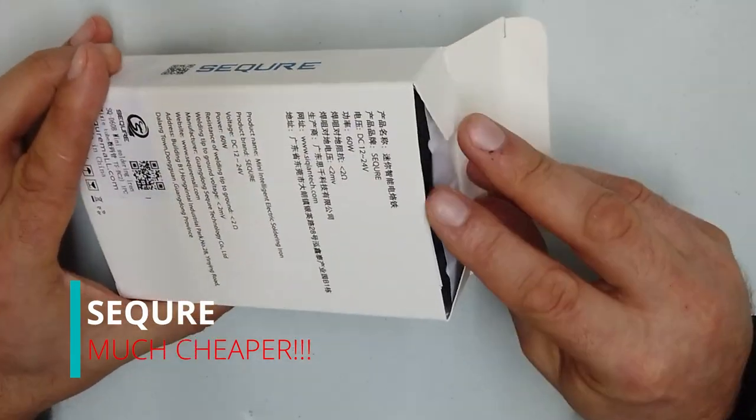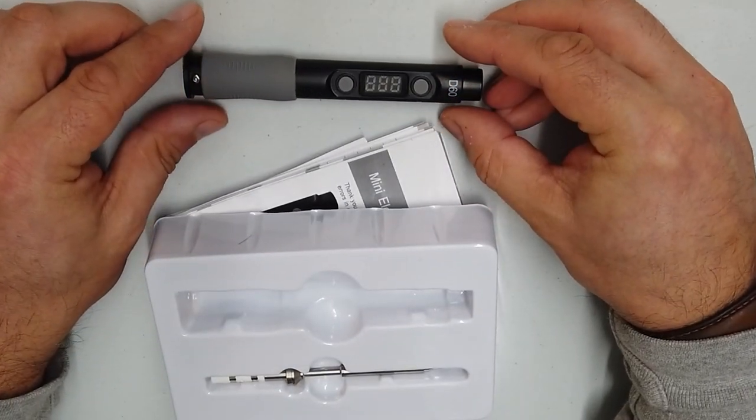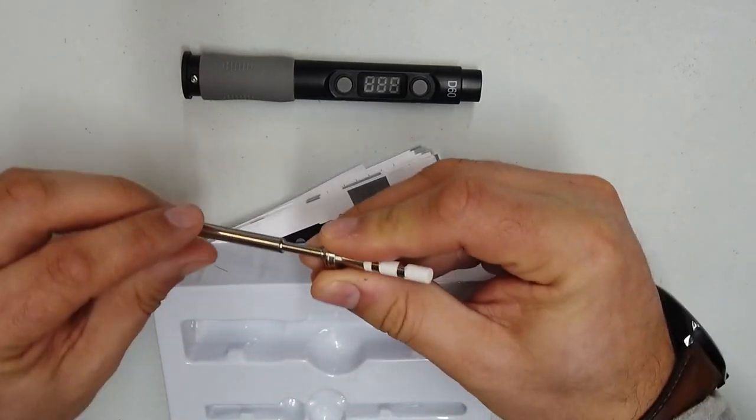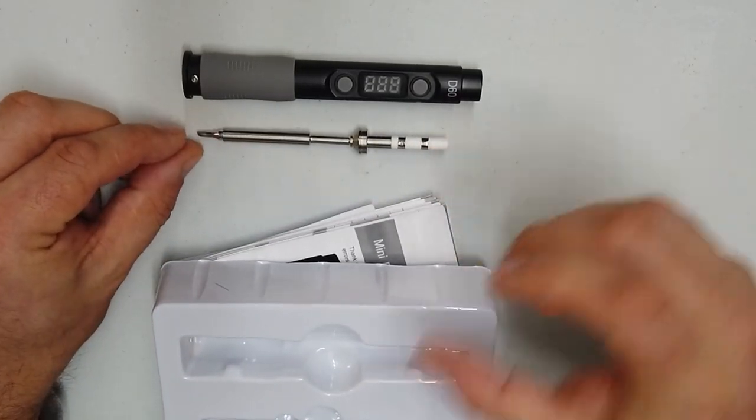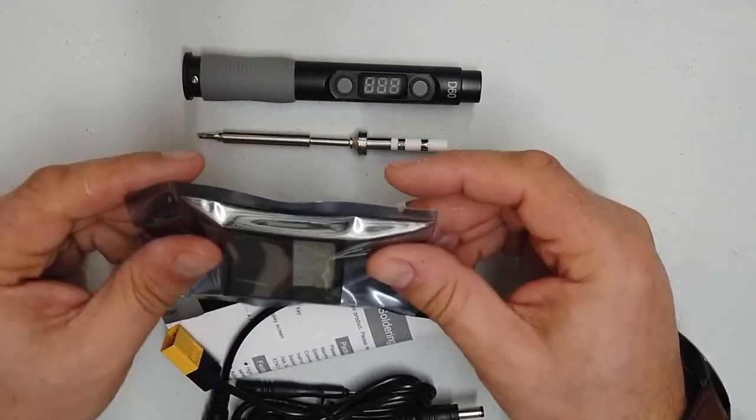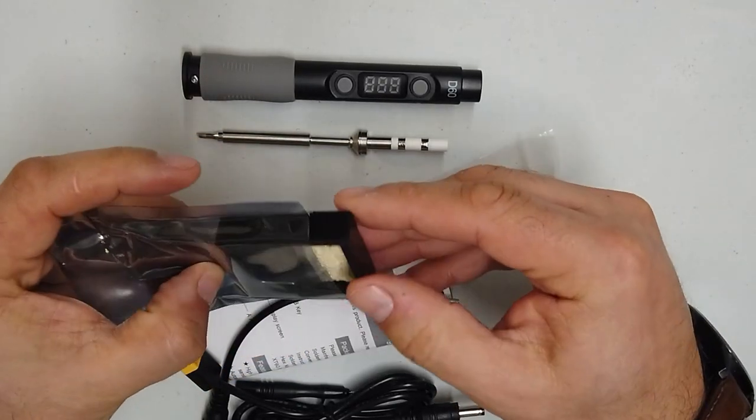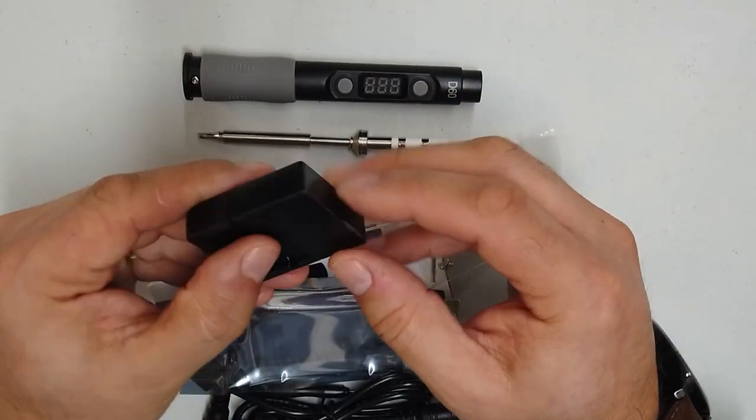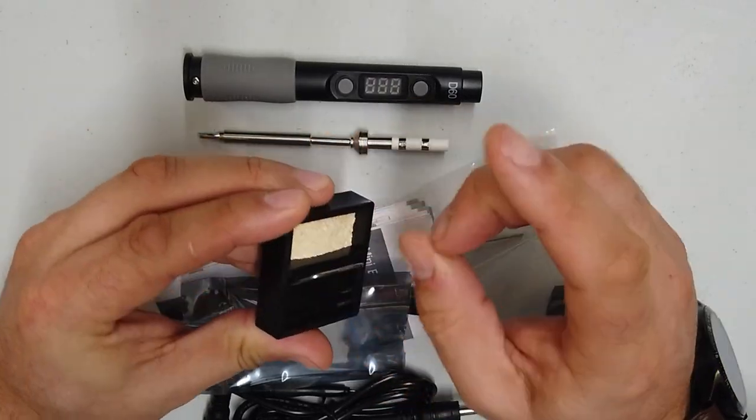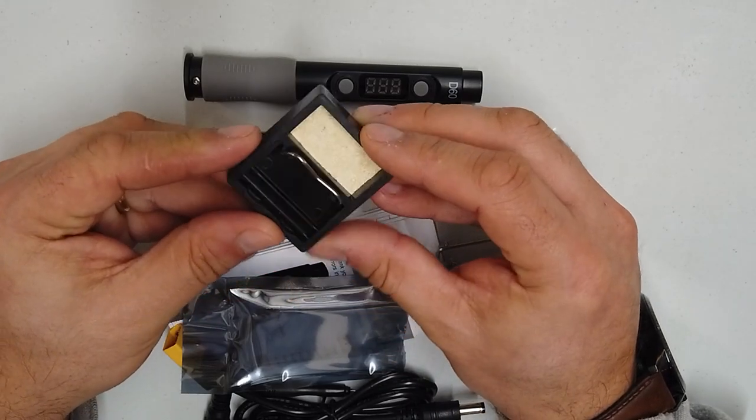Let's get in there. So what have we got? We've got a soldering iron body, a soldering iron tip, a cute little stand made out of heat proof plastic, and it's got a little sponge in there so you can clean your tip.